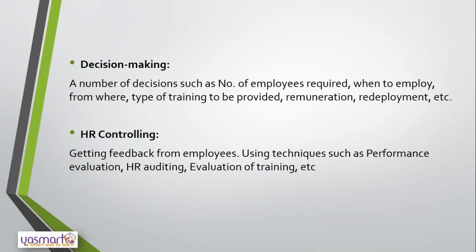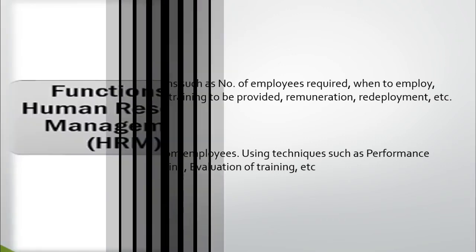HR Controlling: controlling is getting feedback from employees to see whether all human resource plans are implemented successfully. It involves using techniques like performance evaluation, HR auditing, and evaluation of training programs. After evaluating all these performances, human resource management takes necessary remedial measures based on the results, helping to correct deviations toward the right direction.